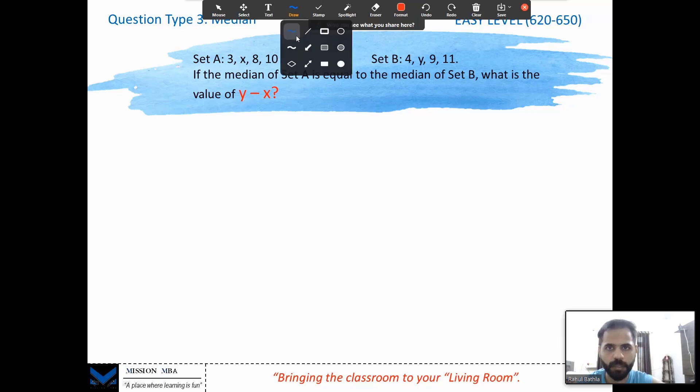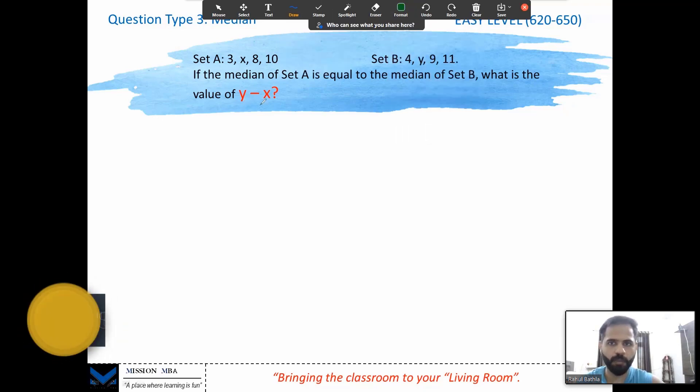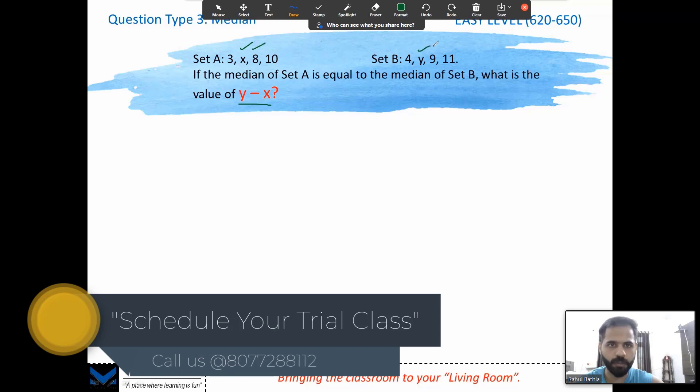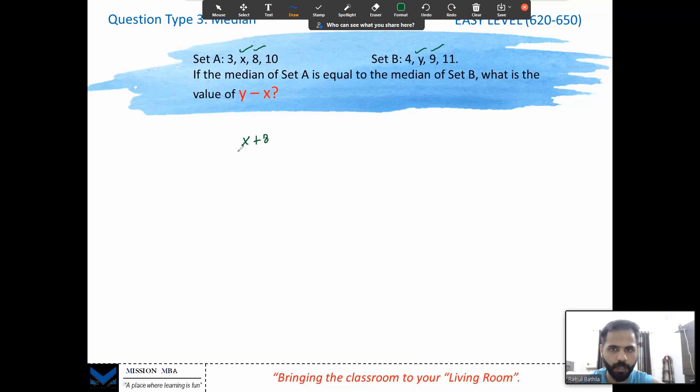So we need to calculate y minus x, and the game is almost done. These two are the central terms. Let's go ahead directly: (x+8)/2 is equal to (y+9)/2, because we know that the median is the average of two central terms. Cancels, cancels. We are interested in y minus x, so y minus x, this goes over there, and the 9 comes to the left-hand side. So 8 minus 9, that's minus 1. The value of y minus x equals to minus 1. That's it, we need to do.